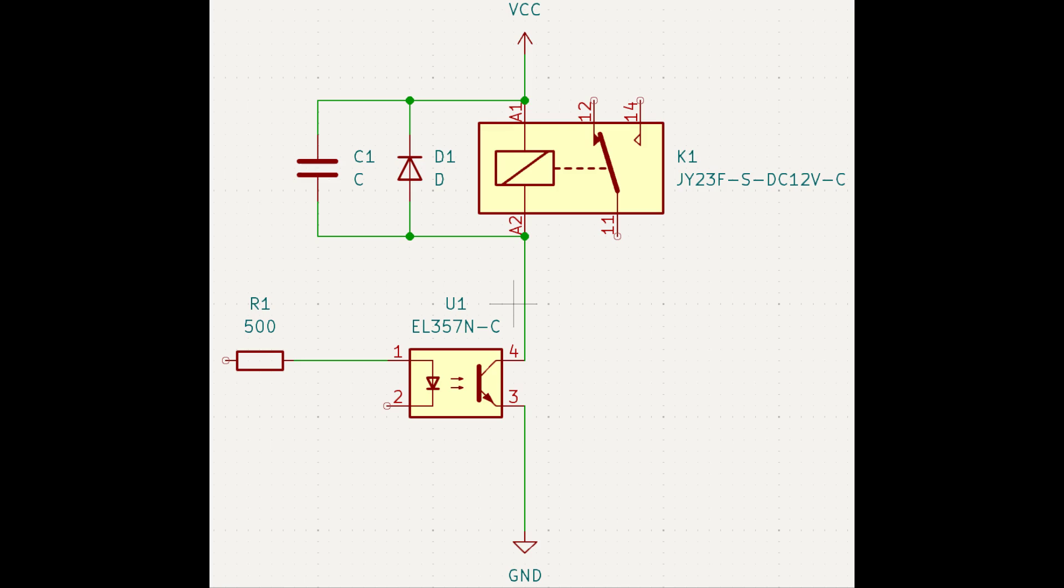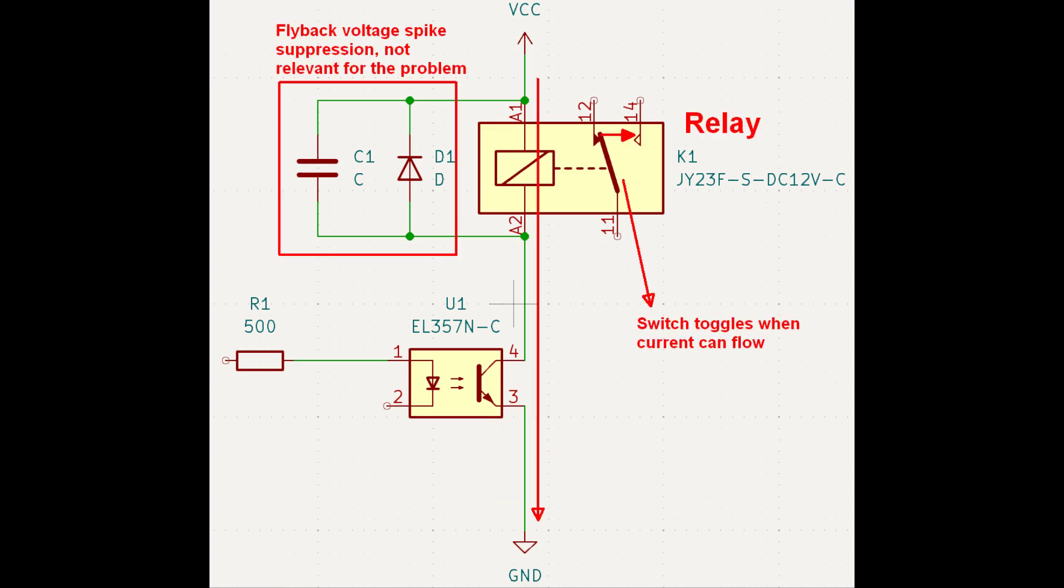So let's dive into the root cause of the problem. When we look at the PCB we can derive the following schematic. There is a signal coming from a shift register going towards an optocoupler which on the output side of the optocoupler allows for a current to flow through the relay so that it can toggle.